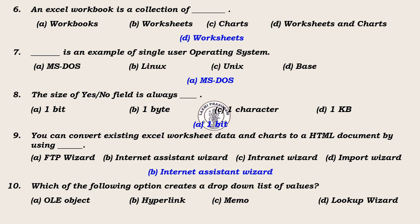10. Which of the following option creates a drop-down list of values? A. OLE object, B. Hyperlink, C. Memo, D. Lookup wizard. Answer: D. Lookup wizard.